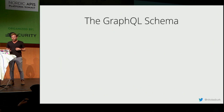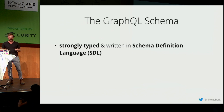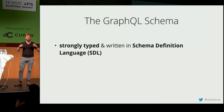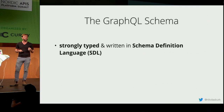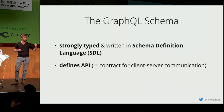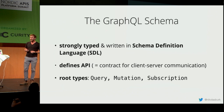The next concept is the GraphQL schema. The schema is essentially the core of GraphQL — it's strongly typed and written in what's called the Schema Definition Language. The Schema Definition Language has a type system you can use to express the capabilities of your API, and it serves as the contract for client-server communication.